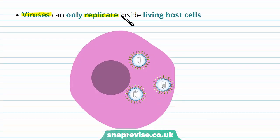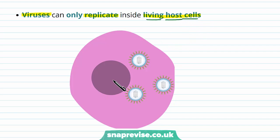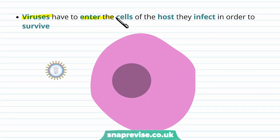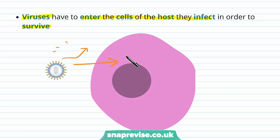Viruses can only replicate when they've entered living host cells. The host refers to the organism they invade, like ourselves, and the cells in the host must be living with their own machinery. The virus has to enter the host cells first, and only inside the cell can it replicate. Living in the tissue fluid wouldn't be enough — it has to go inside the cell and use the machinery there to replicate itself.